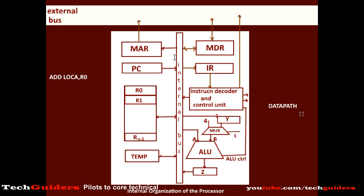For example: the address is transferred from the program counter to the memory address register; the instruction is transferred from the memory data register to the instruction register; the content of R0 is transferred to the ALU; the content of memory location A is transferred from the memory data register to the ALU; the result is transferred from the ALU to the Z register, then from the Z register to register R0. So these are a series of register-level data transfers. Every instruction at the lowest level is a series of register-level data transfers, which must be done in an ordered and timely manner, and that ordering and timing is ensured by the control unit by producing the necessary control signals.